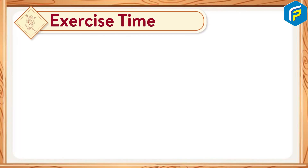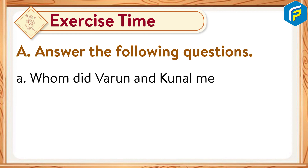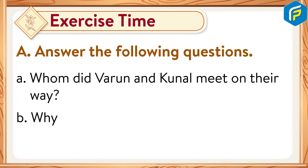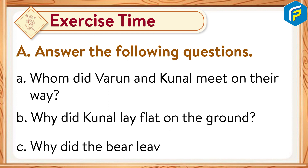Exercise time — Answer the following questions. A: Whom did Varun and Kunal meet on their way? Answer: Varun and Kunal met a bear on their way. B: Why did Kunal lay flat on the ground? Answer: Kunal laid flat on the ground because the bear was coming towards him.